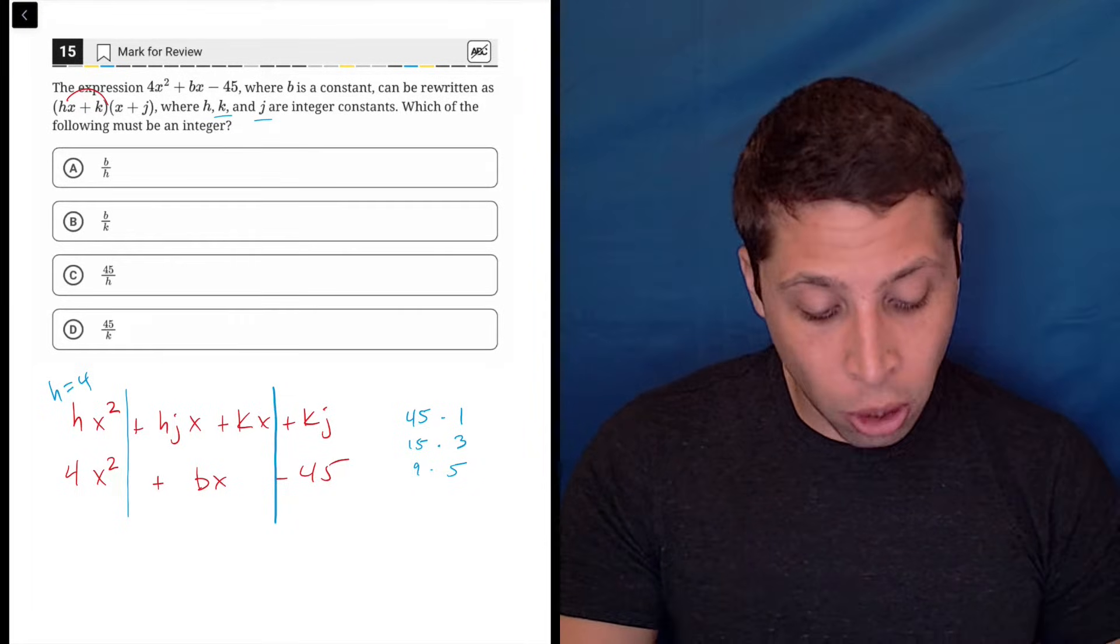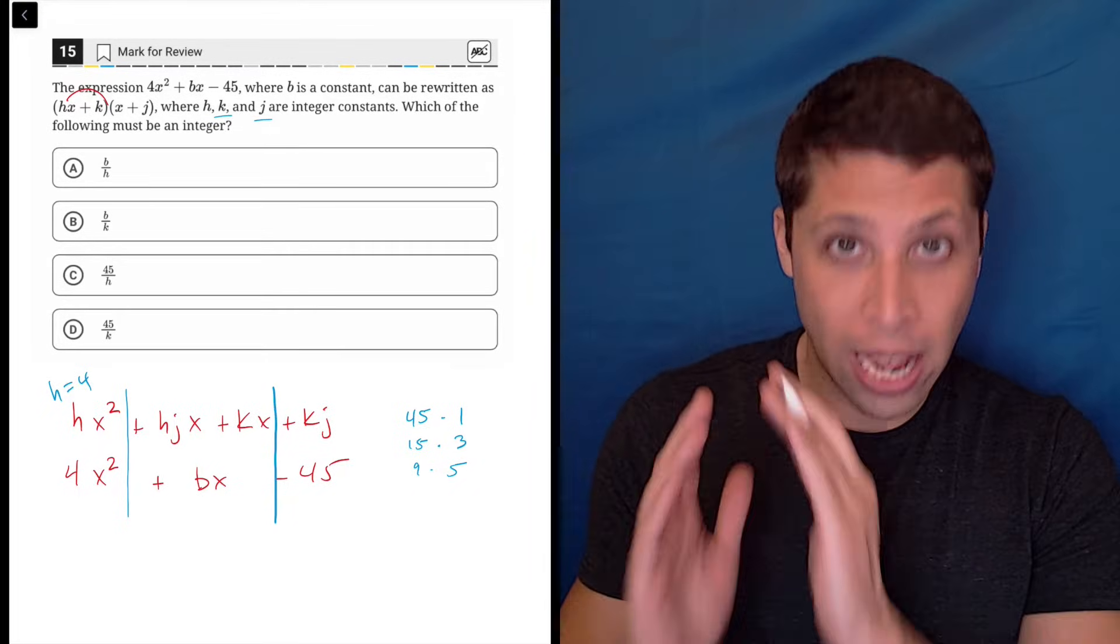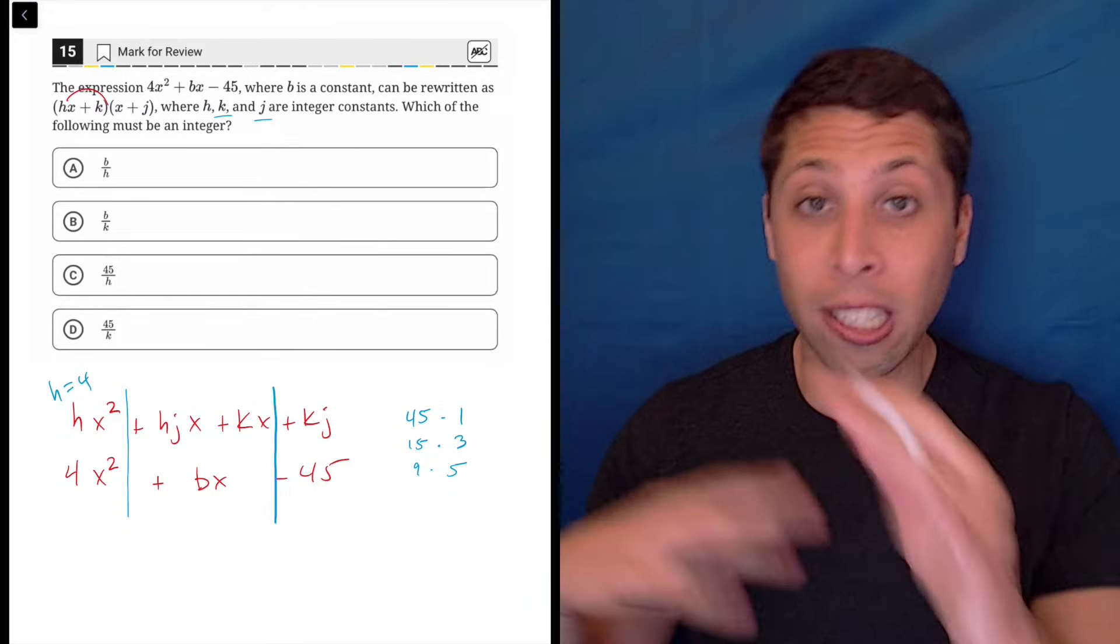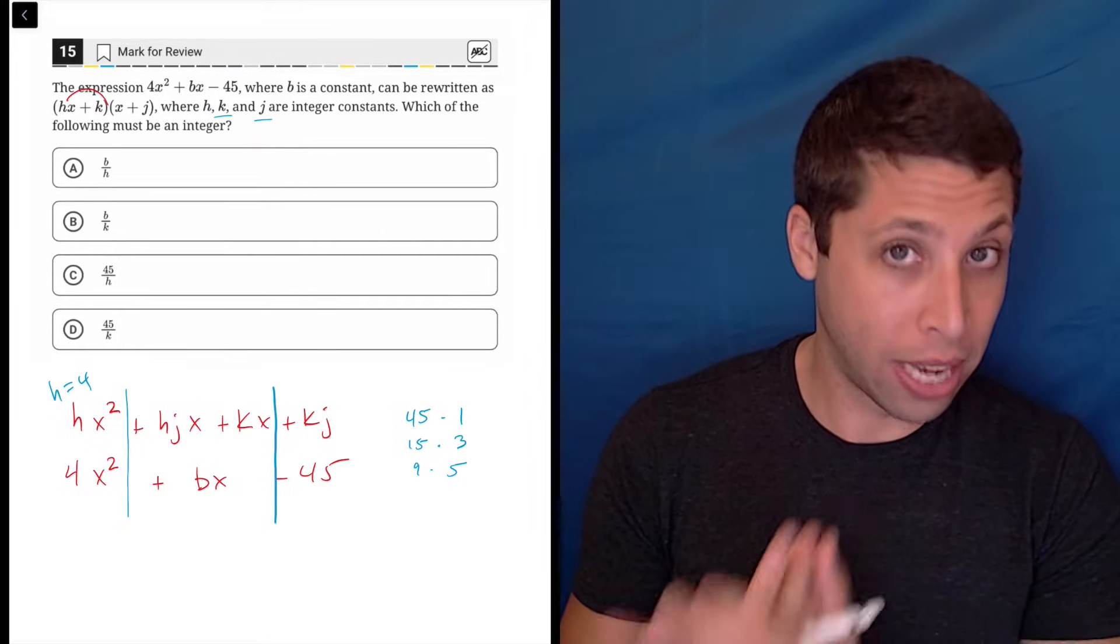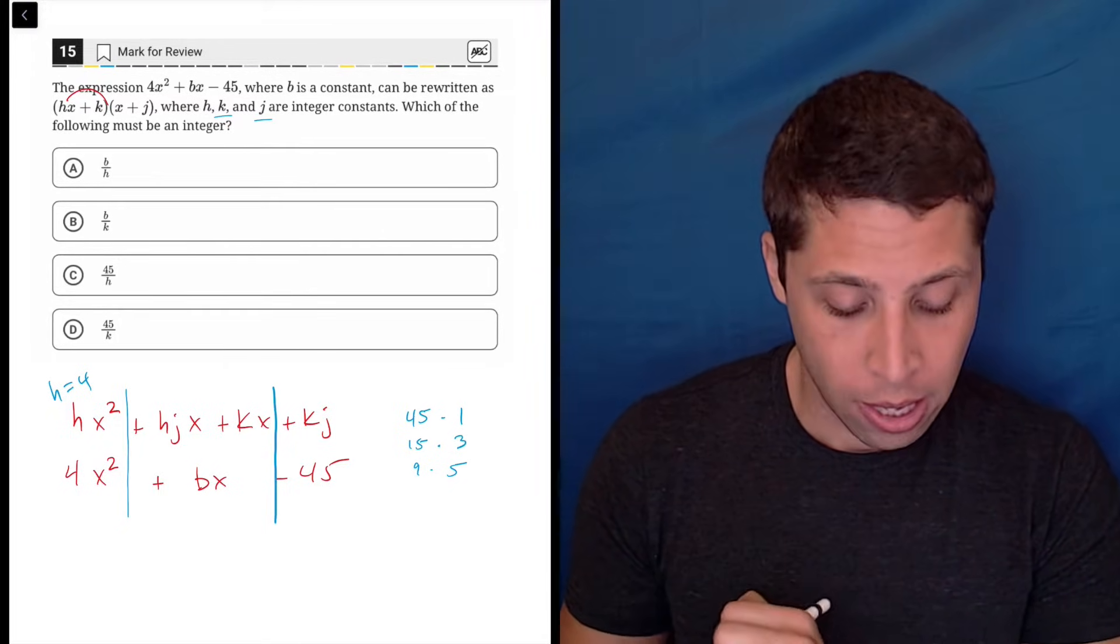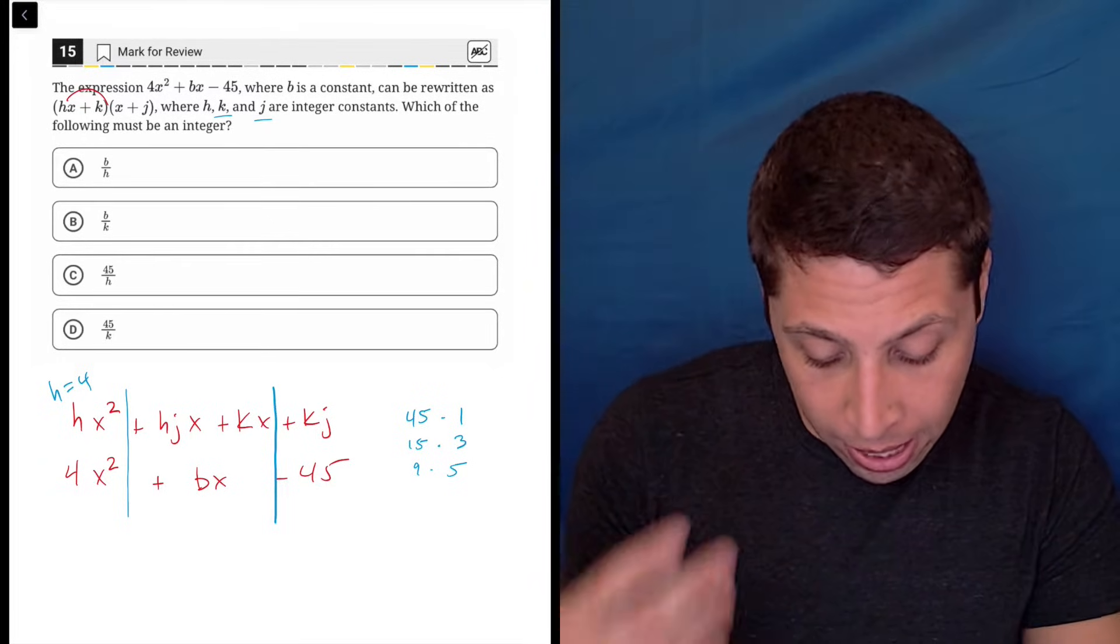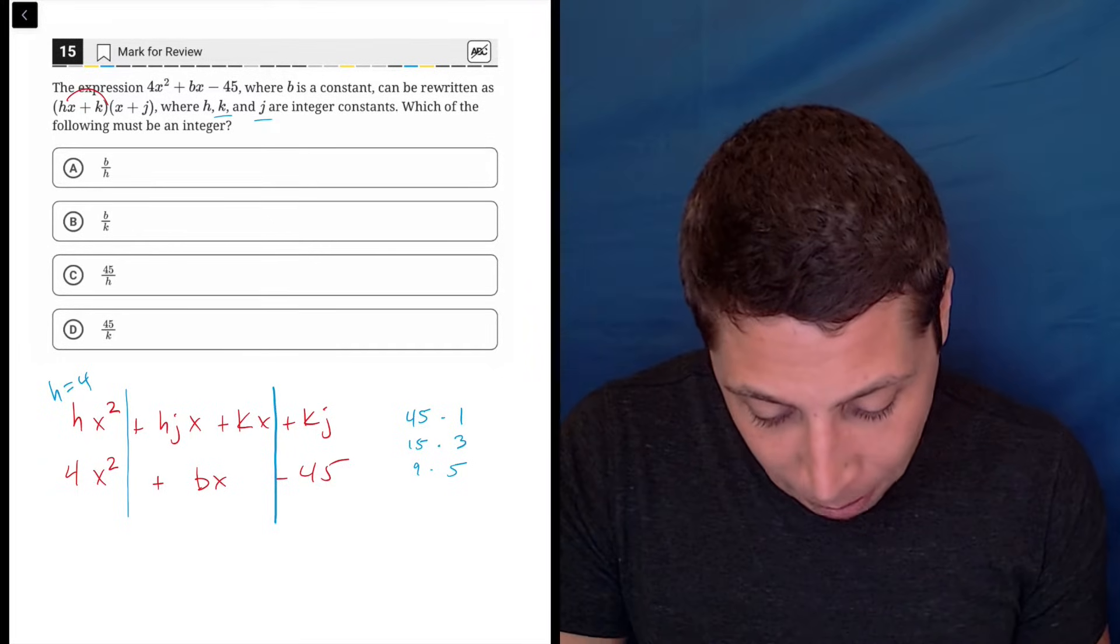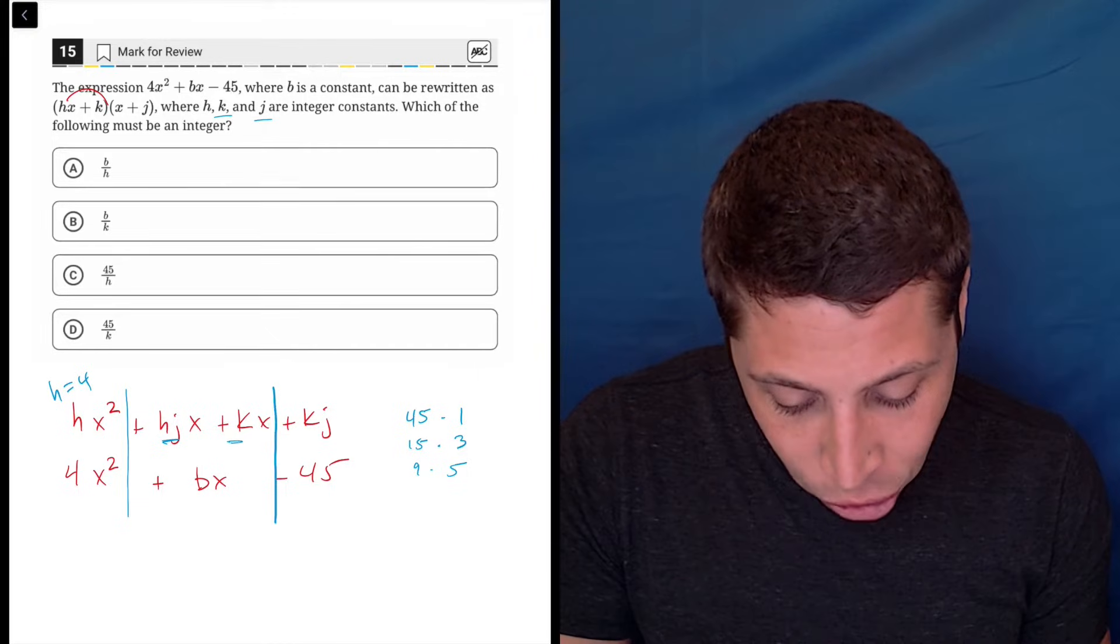So, it's some combination of those. They're telling me there's no decimals. So yes, there are decimal things that multiply to get me 45, but they're telling me that none of those will work. Now, the b and the k, h—like this b is going to come from combining the h, j, and the k.